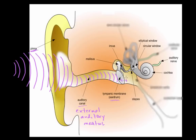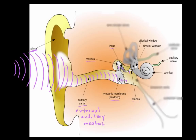When the eardrum vibrates back and forth, it causes three little bones to vibrate: the malleus, the incus, and the stapes. So to recap: sound waves get funneled by the pinna into the external auditory meatus, hit the tympanic membrane which vibrates, and this vibration causes the malleus, incus, and stapes to vibrate back and forth accordingly.